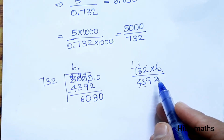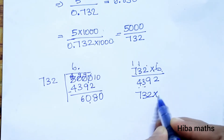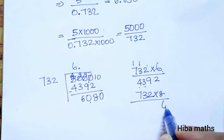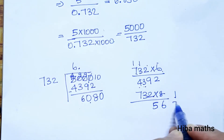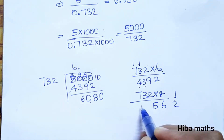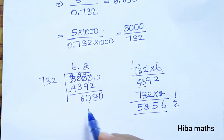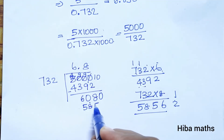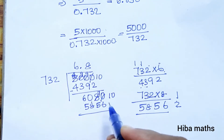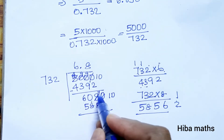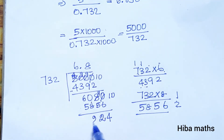Now 732 into 6080: 7 is 49, try 8. 7×8 is 56. Now 60 minus 56 — so 732 into 8: 8×2 is 16, balance 1; 8×3 is 24, plus 1 is 25, balance 2; 8×7 is 56. So 732×8 is 5856.